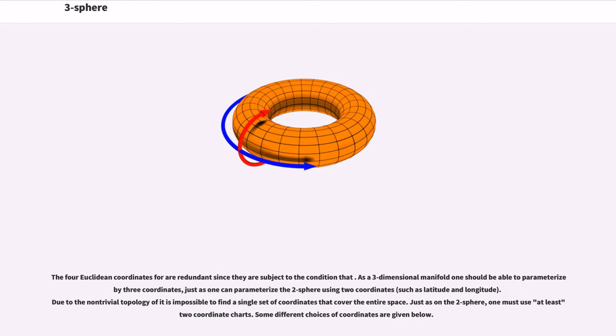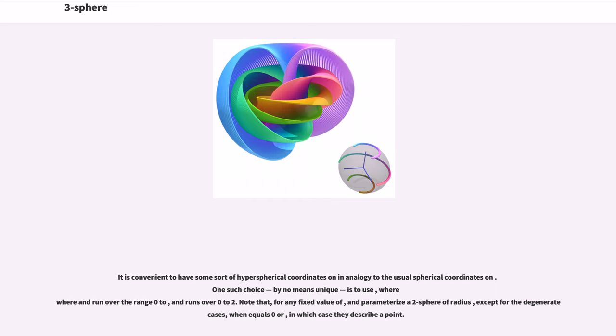just as one can parameterize the two-sphere using two coordinates. Due to the non-trivial topology of it is impossible to find a single set of coordinates that cover the entire space. Just as on the two-sphere, one must use at least two coordinate charts. Some different choices of coordinates are given below. It is convenient to have some sort of hyperspherical coordinates on in analogy to the usual spherical coordinates on. One such choice, by no means unique, is to use,